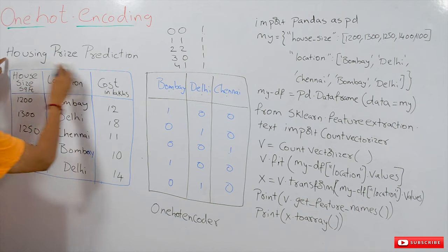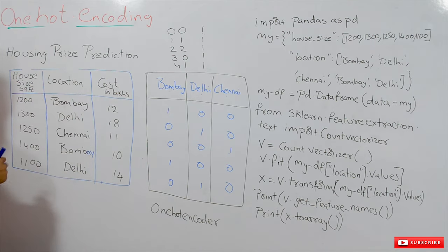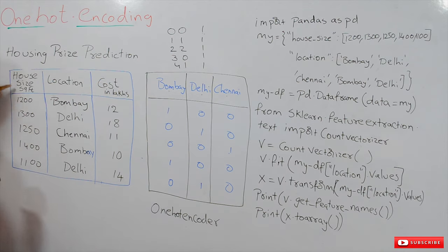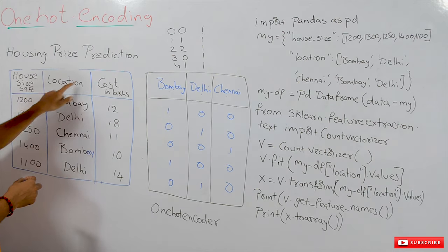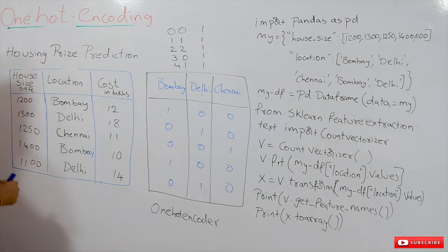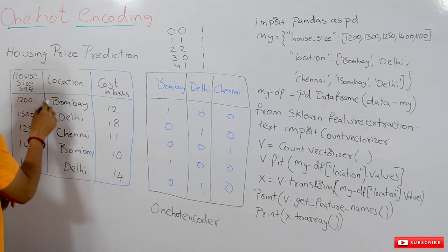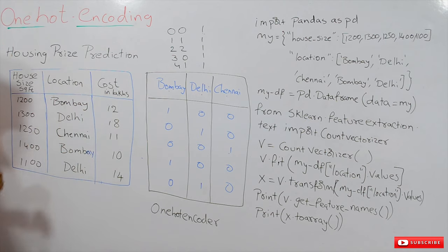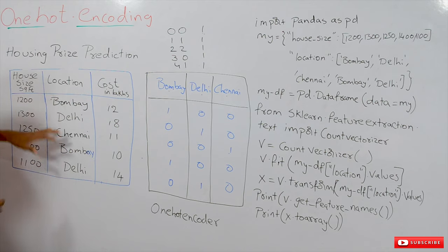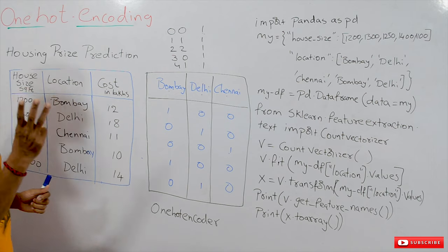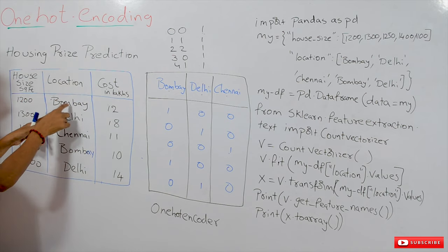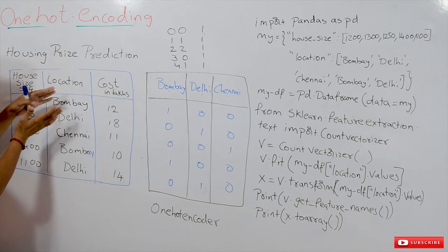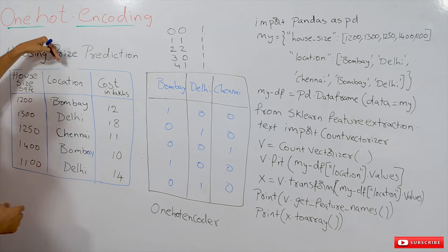This is the dataset we have been considering from the beginning of data pre-processing — the housing price prediction dataset. It has housing size given in square feet, the location of the house, and the cost of the house in lakhs. The size is numerical data, and the location is categorical data. Why? Because we collected data on three different locations: Bombay, Delhi, and Chennai — three different categories.